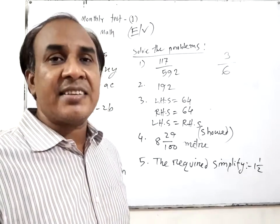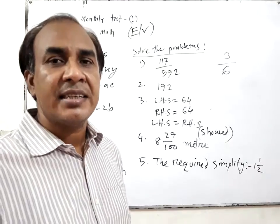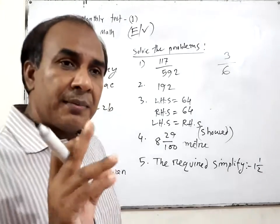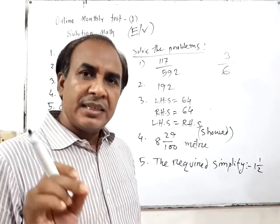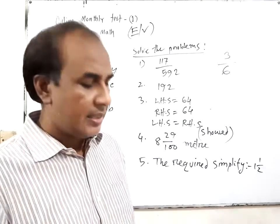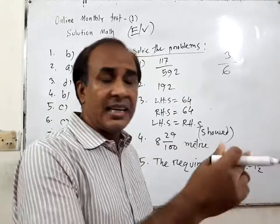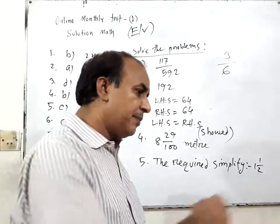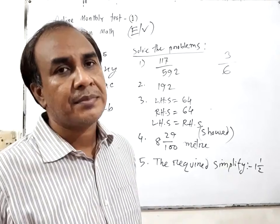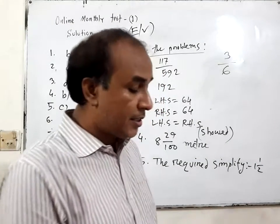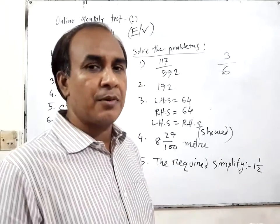Suppose the student only writes the example of proper fraction, then you should not put any number. Because firstly the student has to write the definition. For definition 1 mark and for example 1 mark. If they write the definition, you have to put 1 mark. If they write definition with example, you have to put 2 marks. If the student only writes the example, you should not give number, because they have no knowledge about the definition. There are 5 definitions, so 10 marks total.